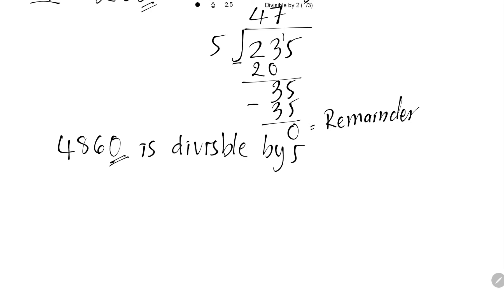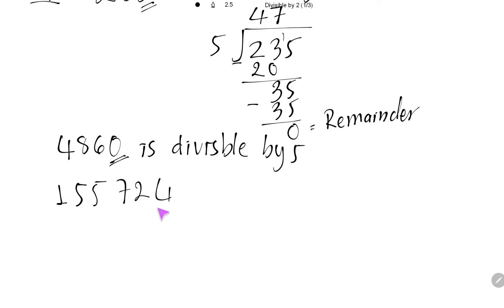Another example: if I have the number 155724, the last digit is number 4. It is not 0 or 5. Then this number is not divisible by 5.